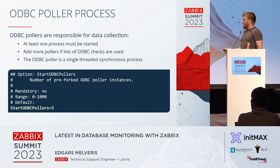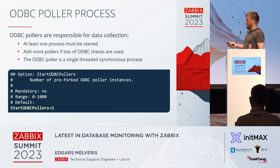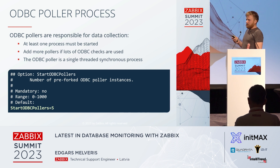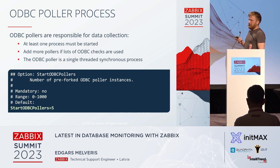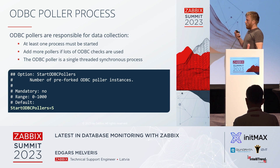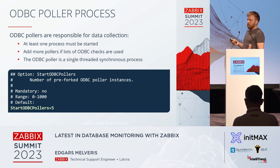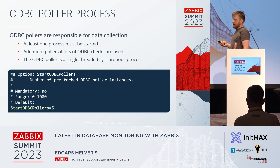From Zabbix's side, it is the ODBC poller that communicates with ODBC. You need to start at least one such poller, otherwise those items will not work at all. It is not asynchronous — it is a synchronous process. The amount you will need depends on how many databases you are monitoring from this server or proxy, what types of queries, and how long they execute. There is no universal rule — you just need to see how busy they are and start more as needed.